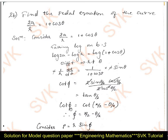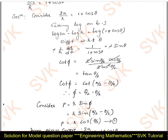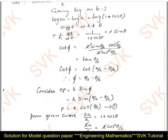Simplifying the right-hand side using identities: sin θ = 2·sin(θ/2)·cos(θ/2) and 1 + cos θ = 2·cos²(θ/2). The 2·cos(θ/2) cancels, leaving sin(θ/2)/cos(θ/2) = tan(θ/2). Since the left-hand side is cot φ, expressing the right-hand side in terms of cot: tan(θ/2) = cot(π/2 − θ/2). Cancelling cot on both sides, φ = π/2 − θ/2. Substituting into the pedal equation p = r·sin φ, we get p = r·sin(π/2 − θ/2) = r·cos(θ/2).